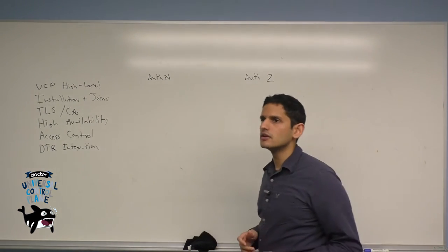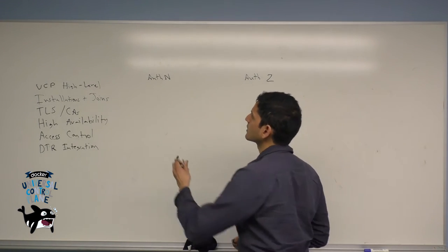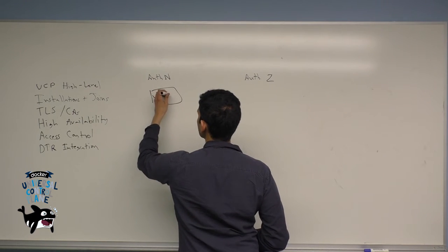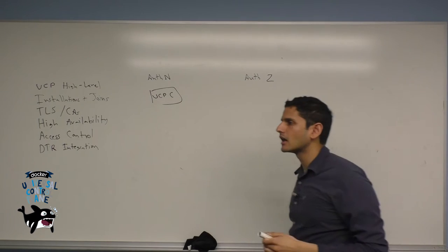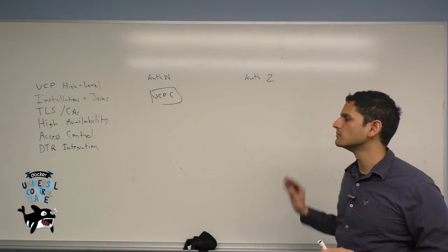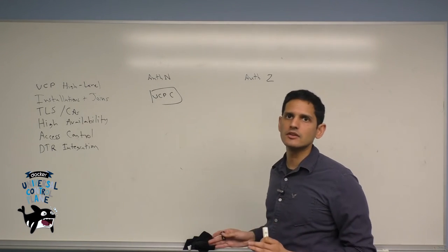Within UCP, you can manage users through one of two methods: built-in and LDAP Active Directory. In built-in, the UCP controller allows you to set and create users, create accounts, provide different levels of access, and maintain and manage things like passwords. All of that is done directly within UCP.